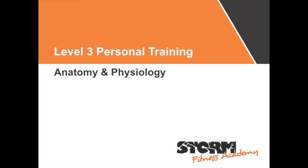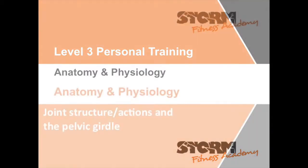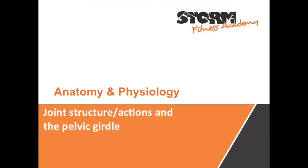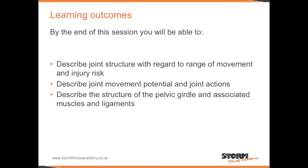Level 3 Personal Training: Anatomy and Physiology — Joint Structure, Actions and the Pelvic Girdle. By the end of this session you will be able to describe joint structure with regard to range of movement and injury risk, describe joint movement potential and joint actions, and describe the structure of the pelvic girdle and associated muscles and ligaments.